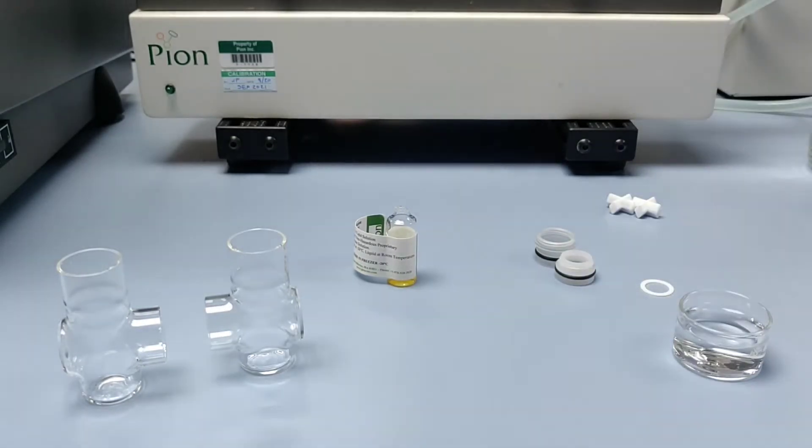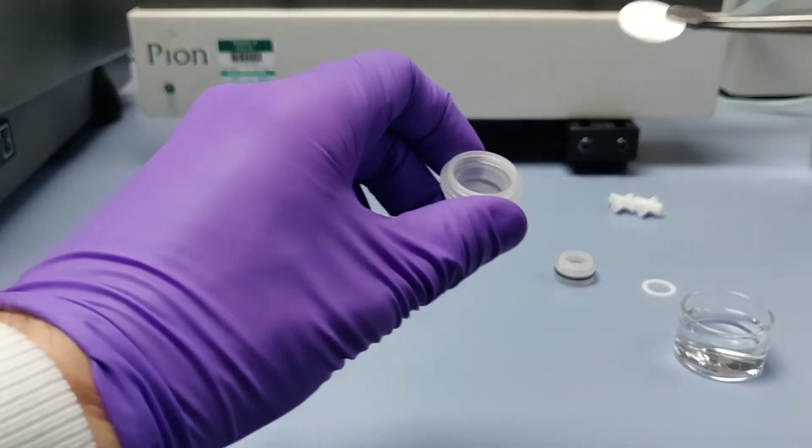Assembly starts by placing the membrane into the female half of the membrane holder. This is done wearing clean gloves and using tweezers. It is important to ensure that the membrane remains clean and free from oils from the skin.